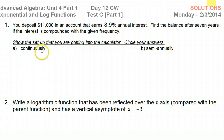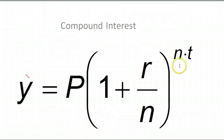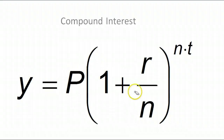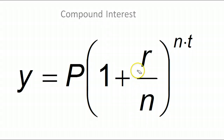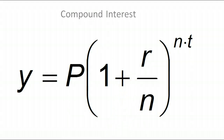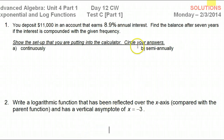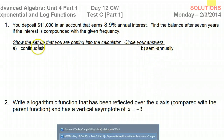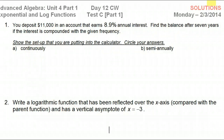So for compound interest — compounded continuously, semi-annually, quarterly, monthly, daily — there are different formulas. For part B, when we do semi-annually, the general compound interest formula is what we use. But continuously has its own formula.